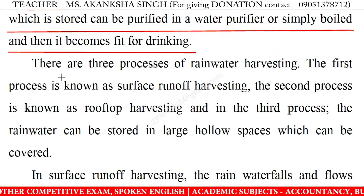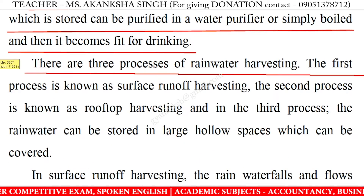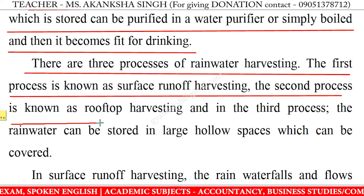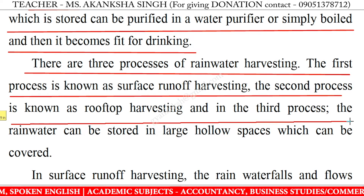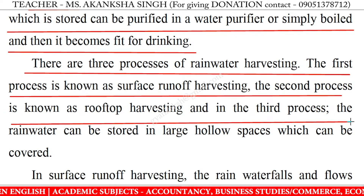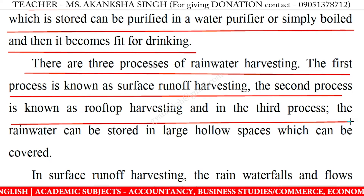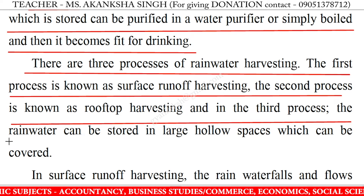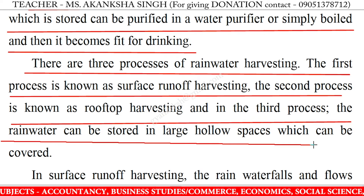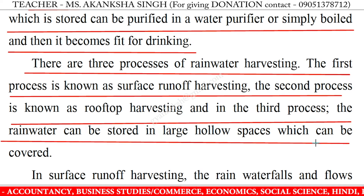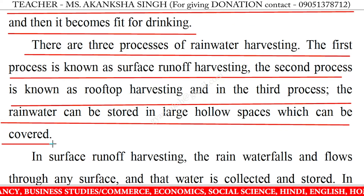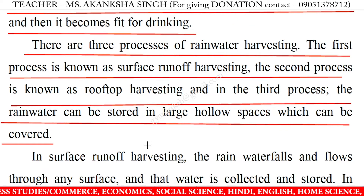There are three processes of rainwater harvesting. The first process is known as surface runoff harvesting. The second process is known as rooftop harvesting. And in the third process, the rainwater can be stored in large hollow spaces which can be covered.